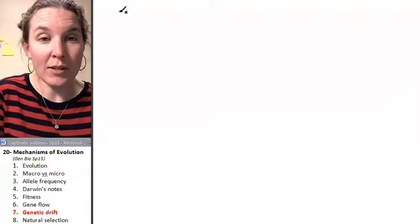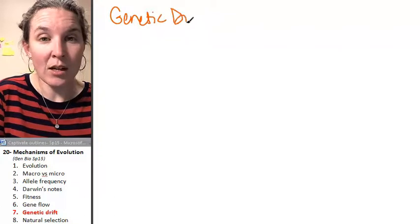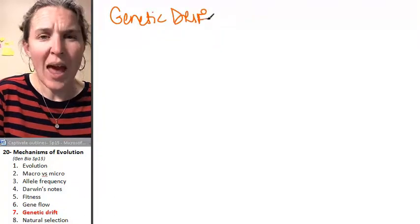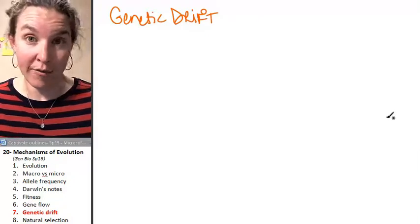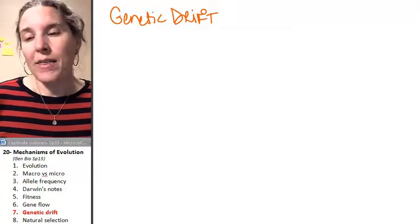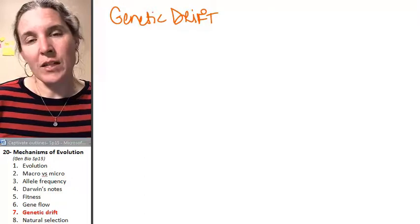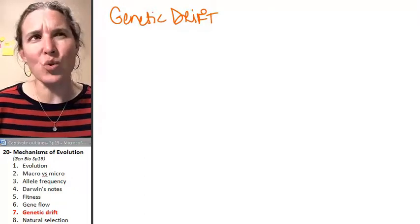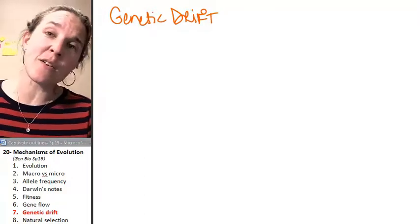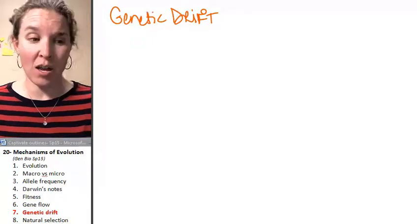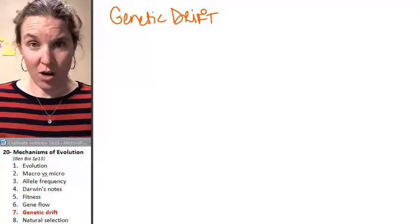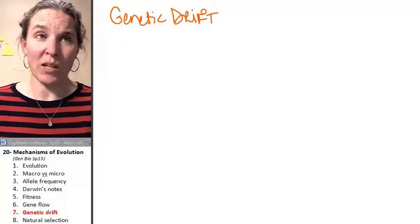Alright, our next example is called genetic drift. When I think about genetic drift, I think about drifting like a piece of leaf drifting on a river. It's just kind of randomly moving, like it's random.